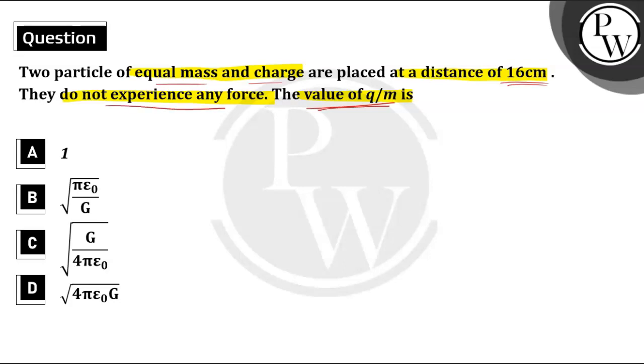They are not experiencing any force, so that means the electrostatic force of repulsion between the two particles will be balanced by the gravitational force of attraction. We can say Coulomb force will be magnitudinally equal to the gravitational force between the two particles.